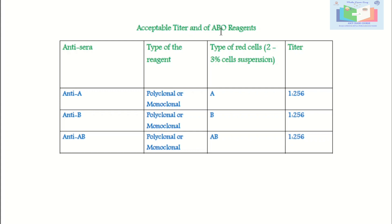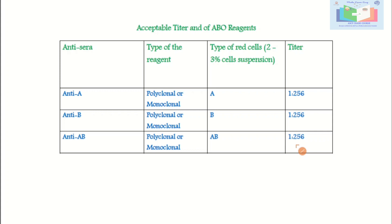Acceptable titers for ABO antisera: for anti-A (NTA), whether polyclonal or monoclonal, test against 2–3% A cells — the required titer is at least 1:256. For anti-B (NTB), whether polyclonal or monoclonal, test against 2–3% B cells — the required titer is 1:256. For anti-AB (NTAB), whether polyclonal or monoclonal, test against 2–3% AB cells — the required titer is also 1:256. Note that these titers are very important for examination purposes.